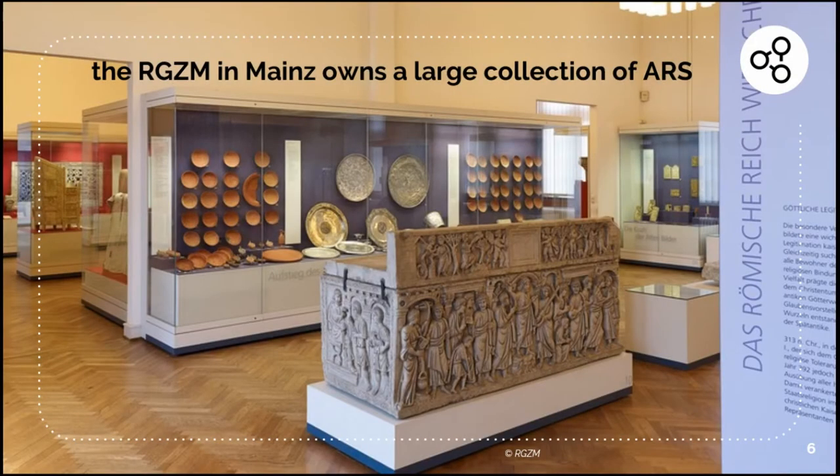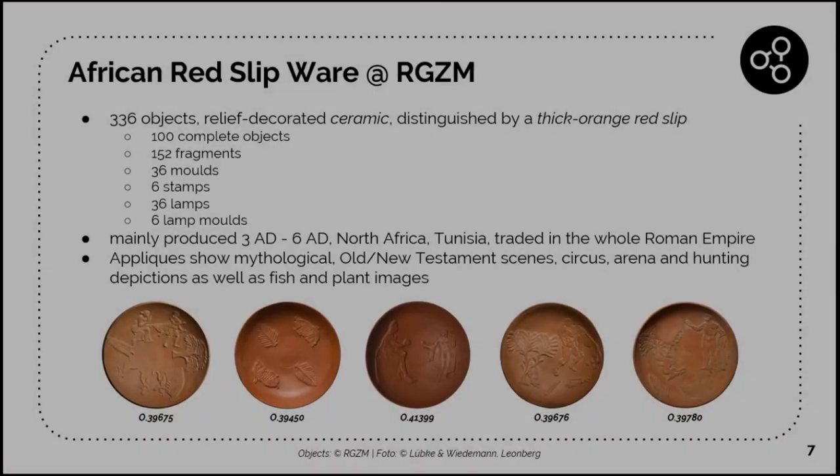At the RGZM in Mainz we own a large collection of ARS. We have more than 300 objects: some complete objects, some fragments, molds, stamps, lamps and lamp molds. They are mainly produced in the 3rd to 6th AD in North Africa, in Tunisia, and were traded in the whole Roman Empire. On all of these bowls there are a lot of scenes from the Old and New Testament, but also fish, plants, and so on.